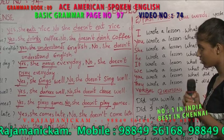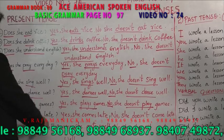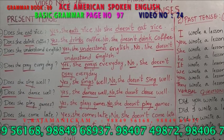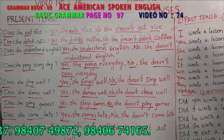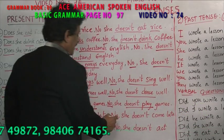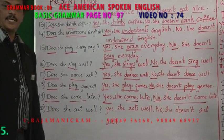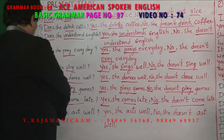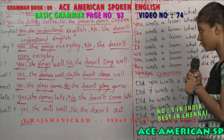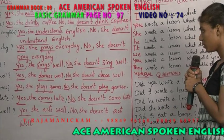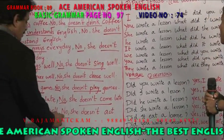Nineteenth question: does she come late? Doesn't come is present tense. Yes, she comes late — comes is present tense. No, she doesn't come late — doesn't come is present tense. Twentieth question: does she act well? Doesn't act. Yes, she acts well. No, she doesn't act well — present tense answer.